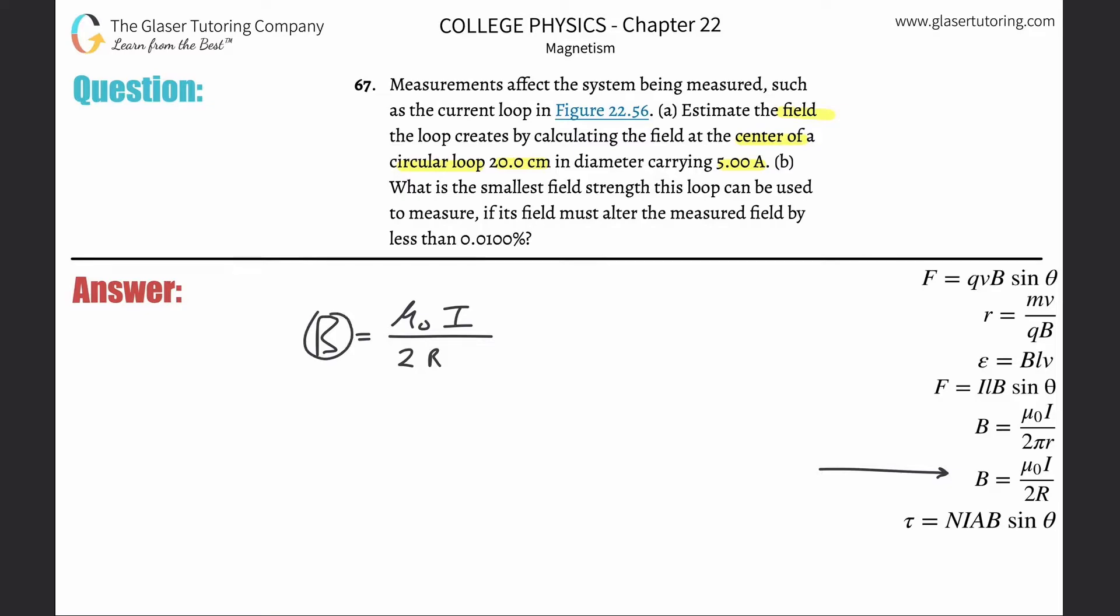What they're asking us for is B, magnetic field. We need to know all the other variables and we do. Make sure you have the right unit. This is 4π multiplied by 10 to the minus 7, the permeability of free space. The current they told us is 5 amps.